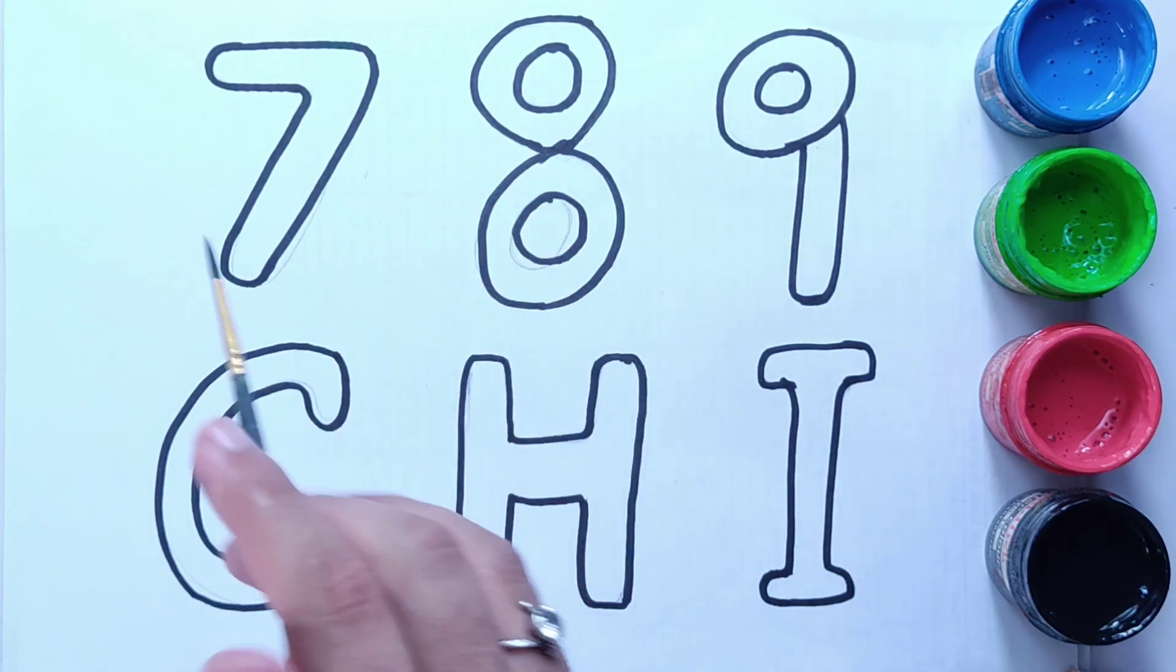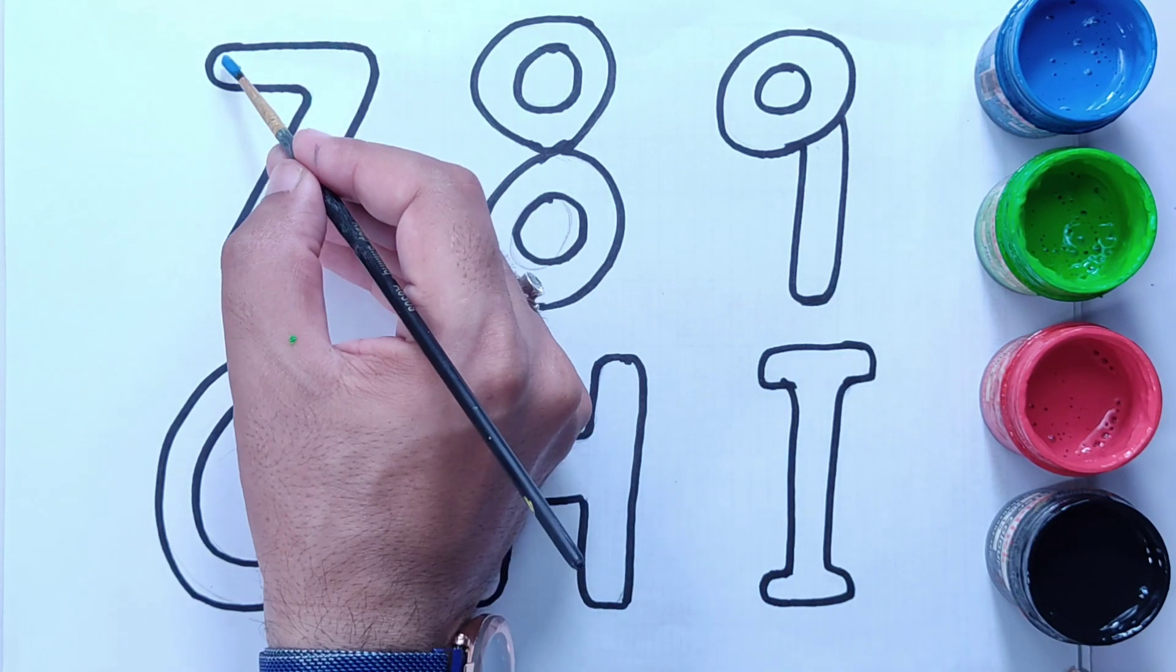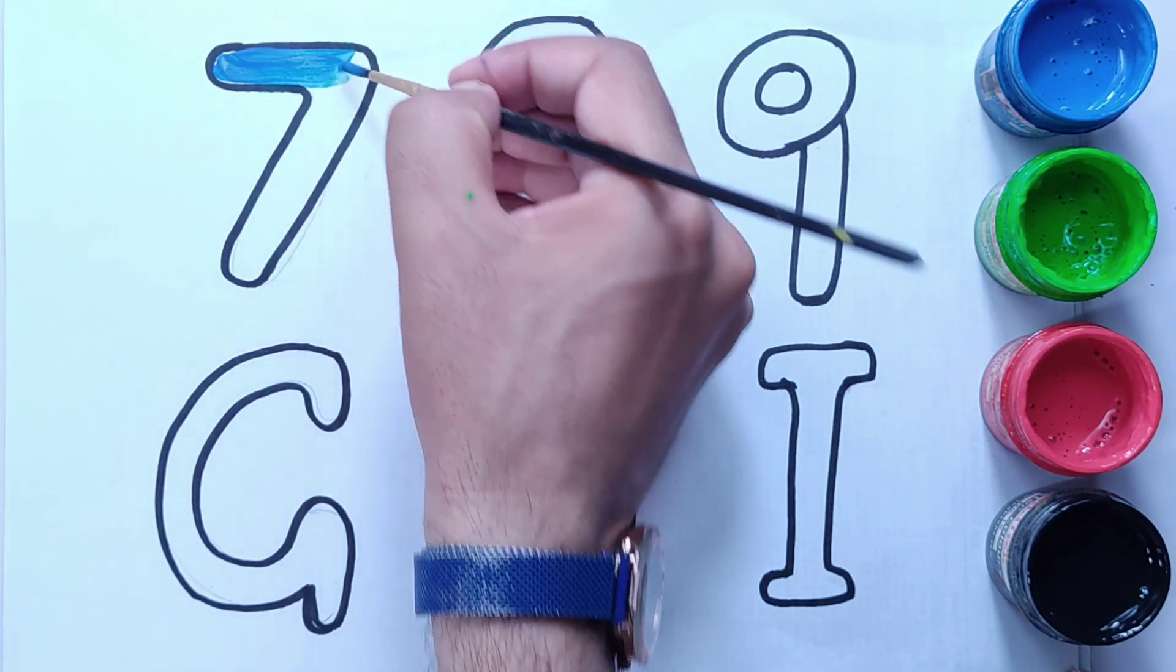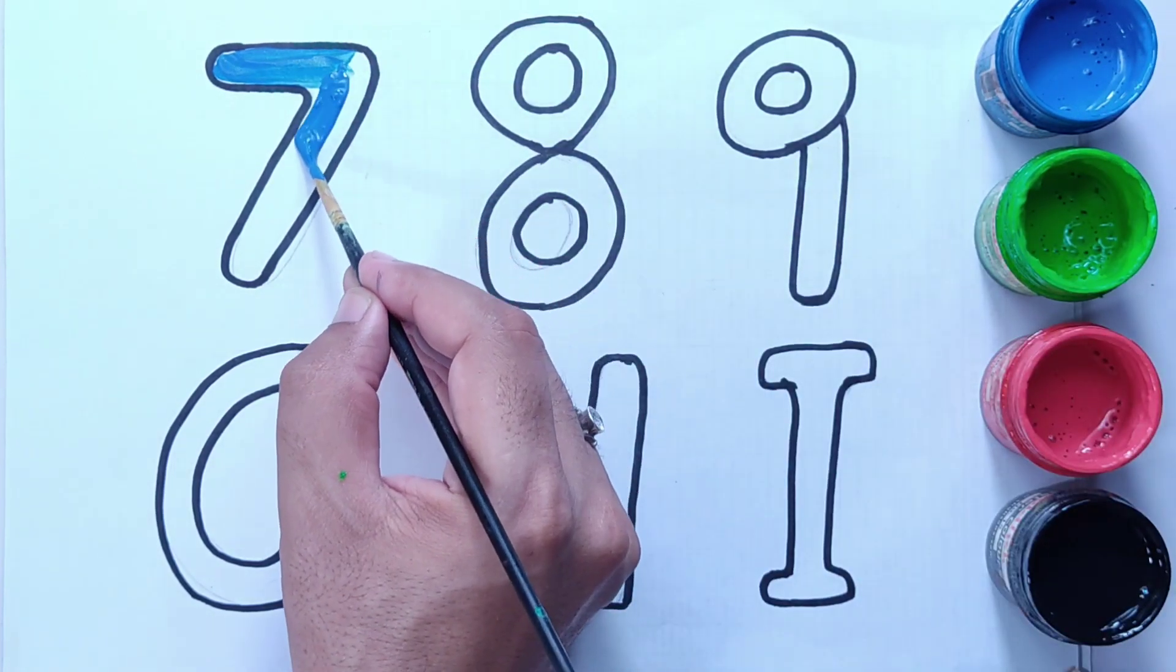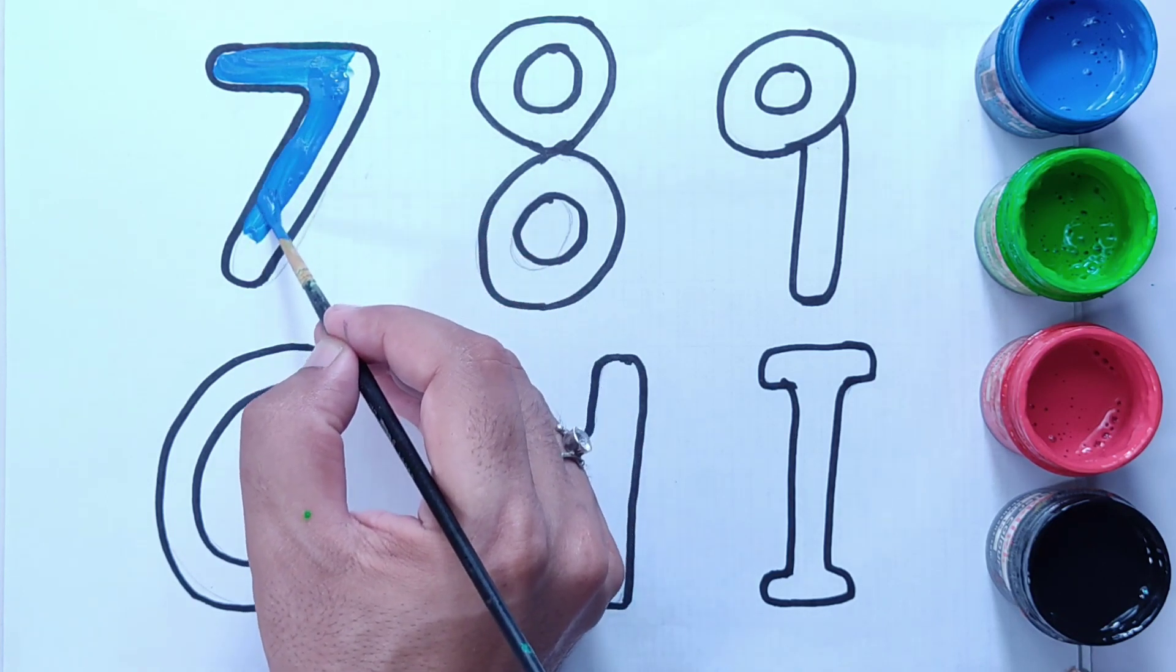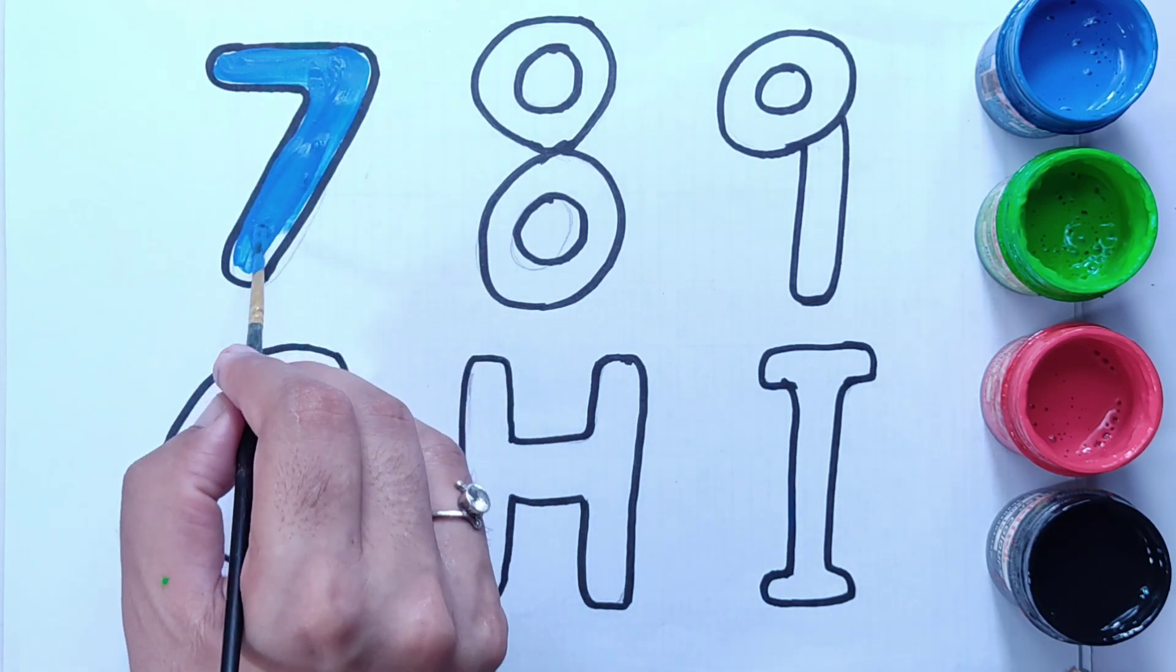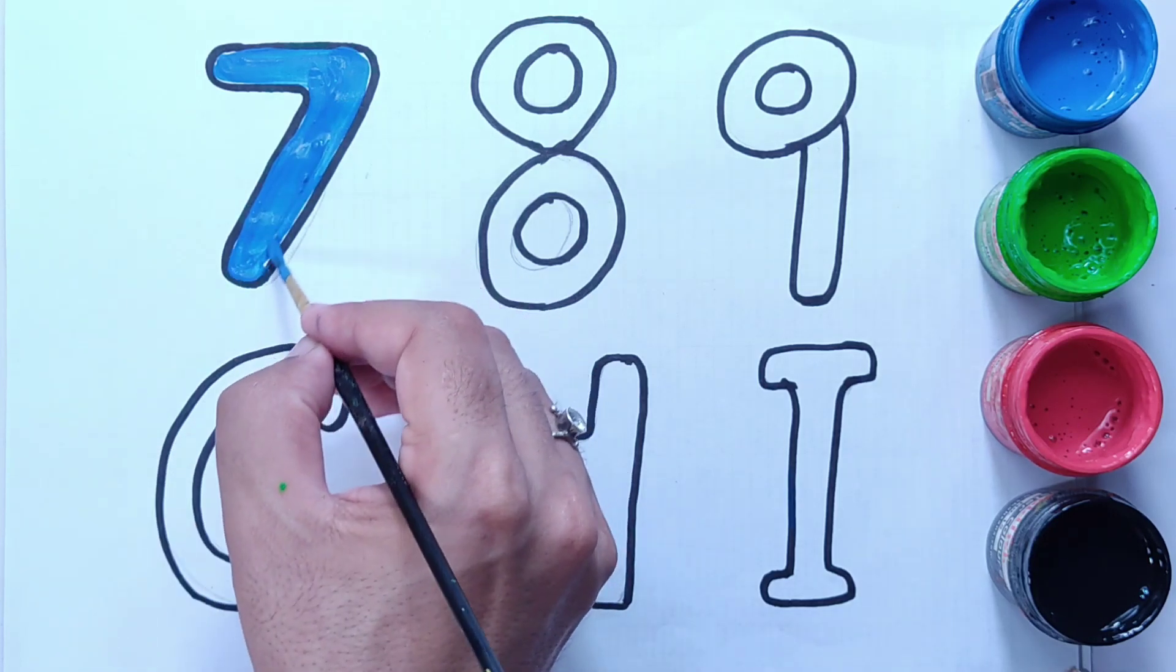Let's start coloring with blue color. This is dark blue color for number seven.